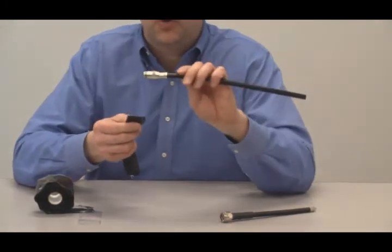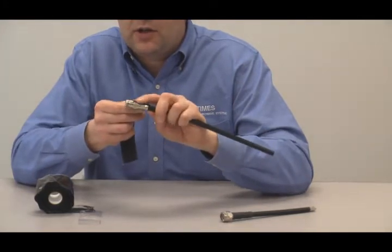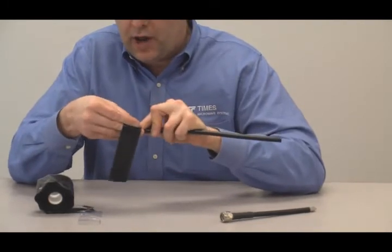So we have a typical N-female on LMR 400 cable. We're just going to get it started. We're going to pull some tension, not too much to get that first wrap.